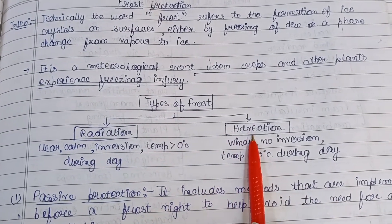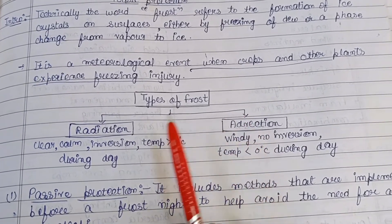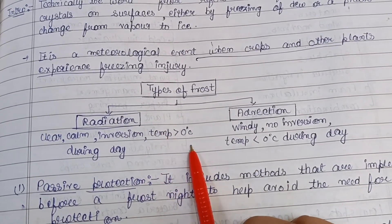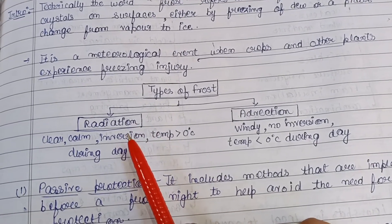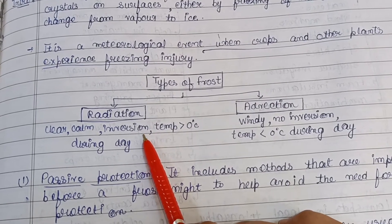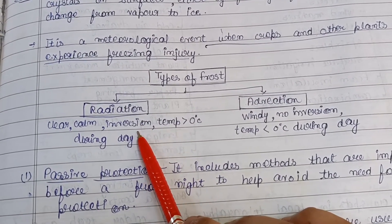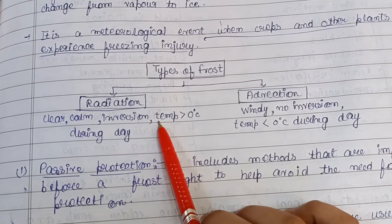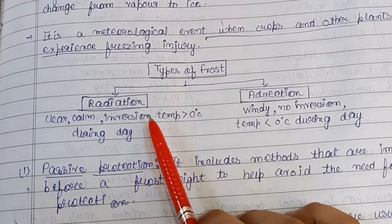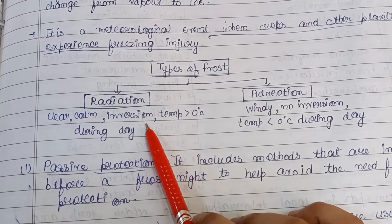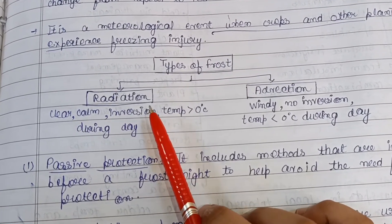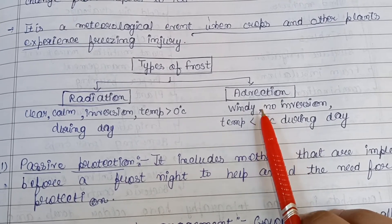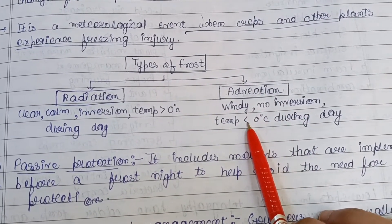There are basically two types of frost. First is radiation frost: there is a clear and calm situation, inversion is present, temperature is above zero degrees Celsius, and it occurs during the daytime. Inversion represents a layer of the atmosphere in which temperature gets warmer the higher you go. During nighttime, a layer of cooler air is trapped near the ground by a layer of warm air above. Second is advection frost: windy conditions, no inversion, temperature is less than zero degrees Celsius, occurring during the day.